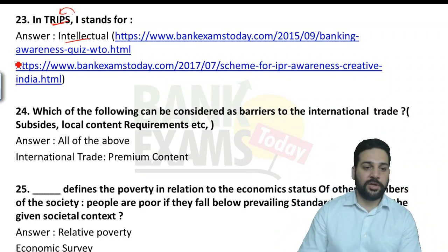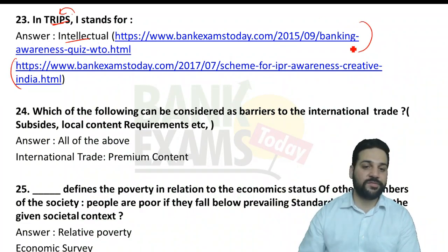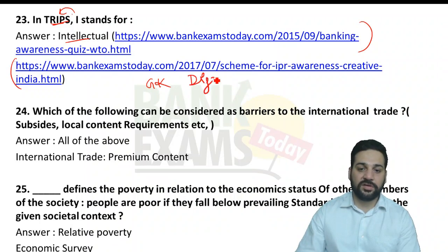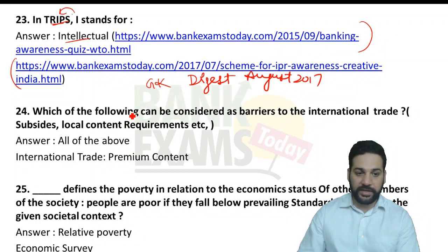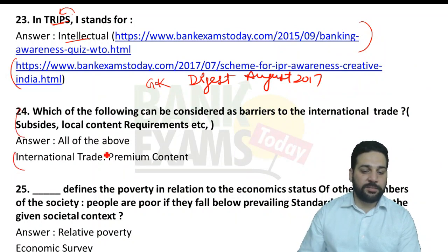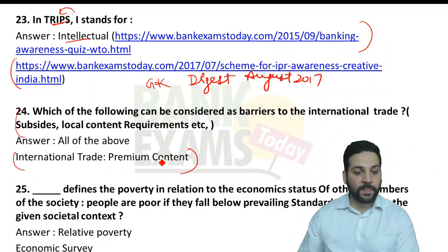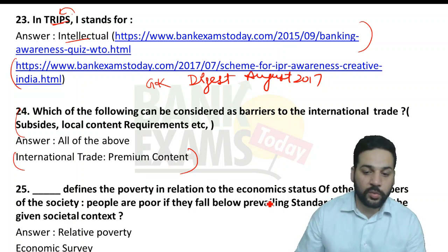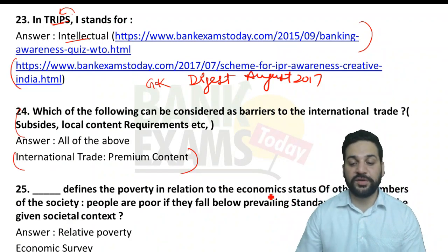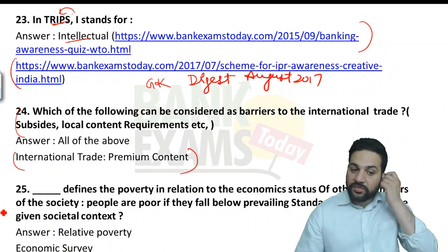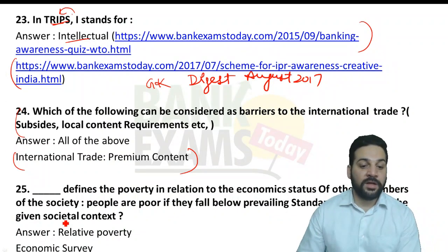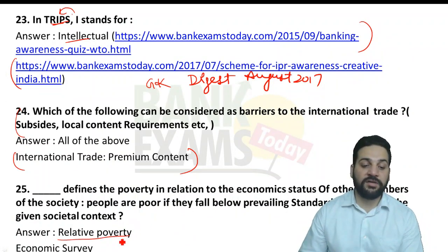Which of the following can be considered a barrier to international trade — part of our international trade premium content in the course. The concept of relative poverty — defined as being poor relative to the prevailing standard of living in a given societal context — was part of our economic survey notes. There were a lot of questions from the economic survey notes.